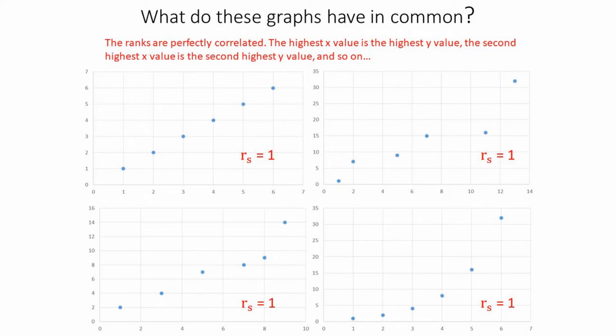Spearman's rank is normally used on scatter graphs. If you look at these graphs over here, you can see that from the points, we can try and create a specific type of correlation. We're going to be looking for if it's got a positive or a negative correlation or relationship. The RS, or the Spearman's rank value, is going to indicate 1 — as you can see, they're forming a strong positive correlation.